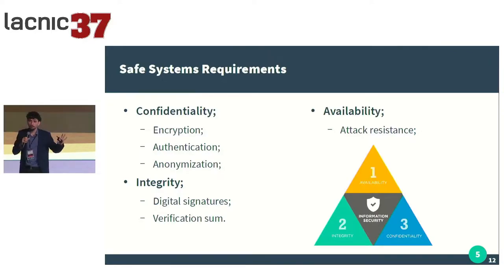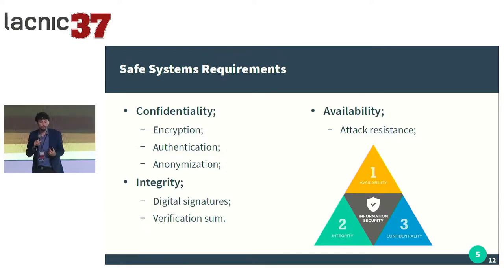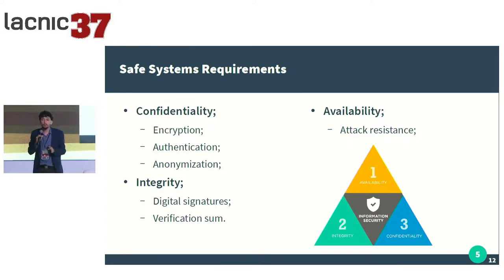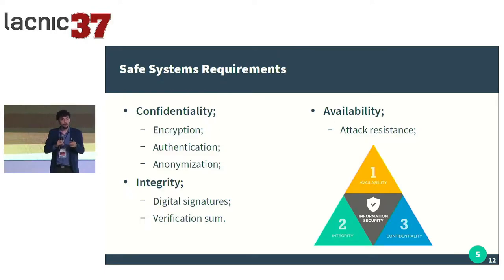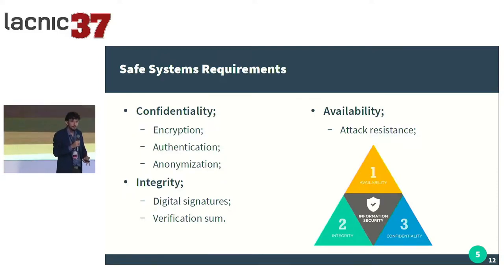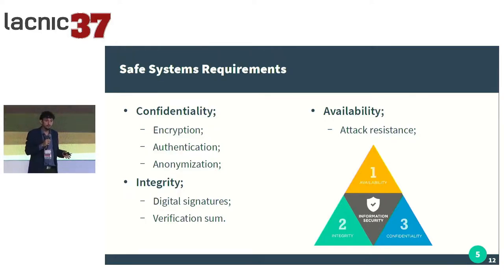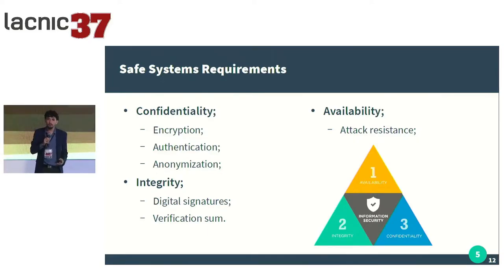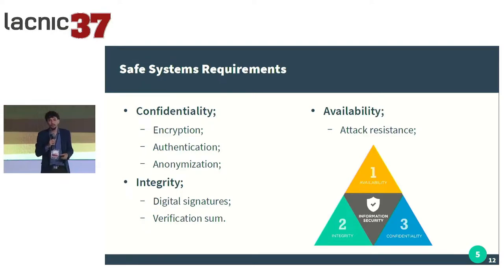Now that we know which devices we are going to handle, let's talk about the requirements for a secure system. I brought the famous CIA triad: confidentiality, availability, and integrity. For confidentiality, we can work with encryption, authentication protocols, and anonymization, which is often necessary when dealing with large quantities of data and sensors. For integrity, we have two well-known approaches: the use of digital signature algorithms and checksums, and when possible, hash algorithms.